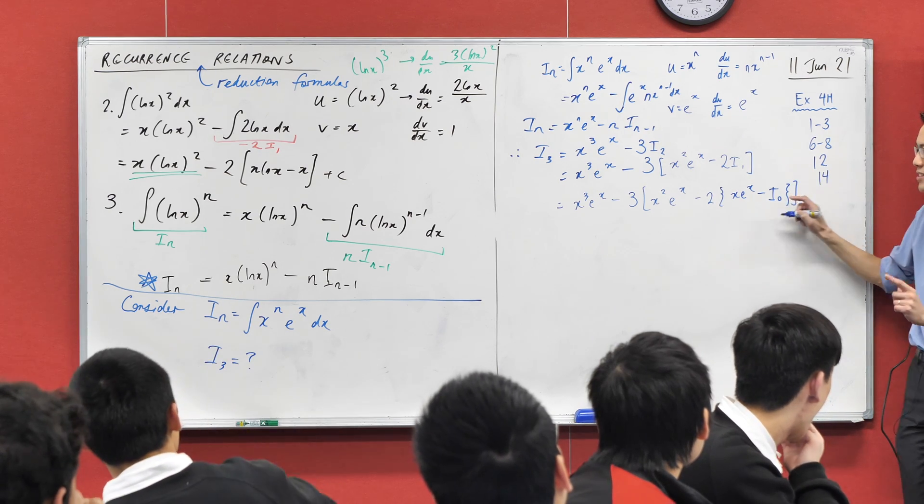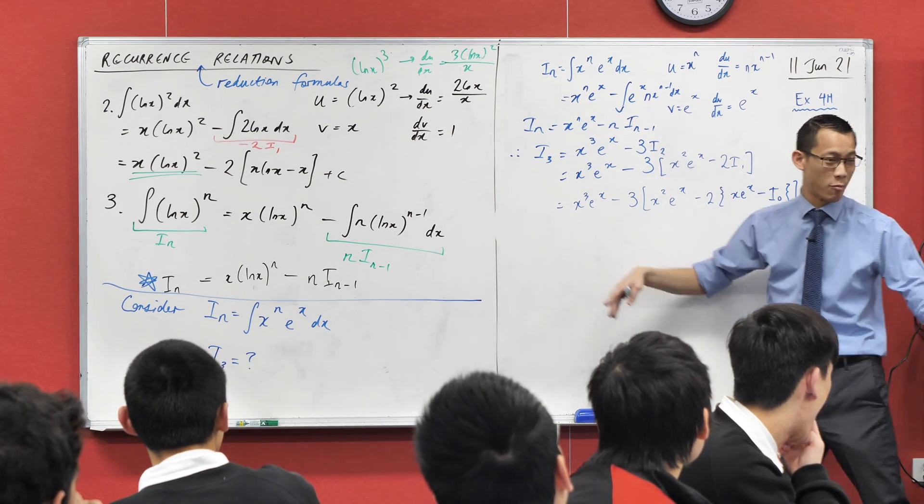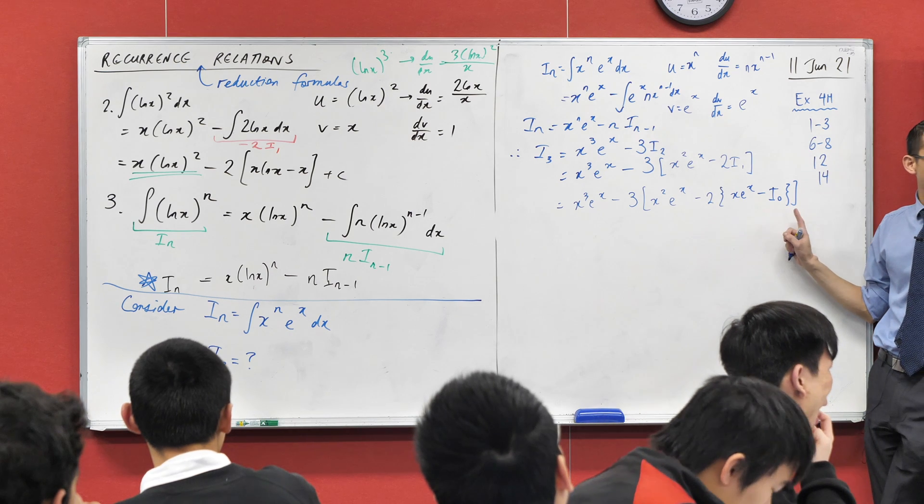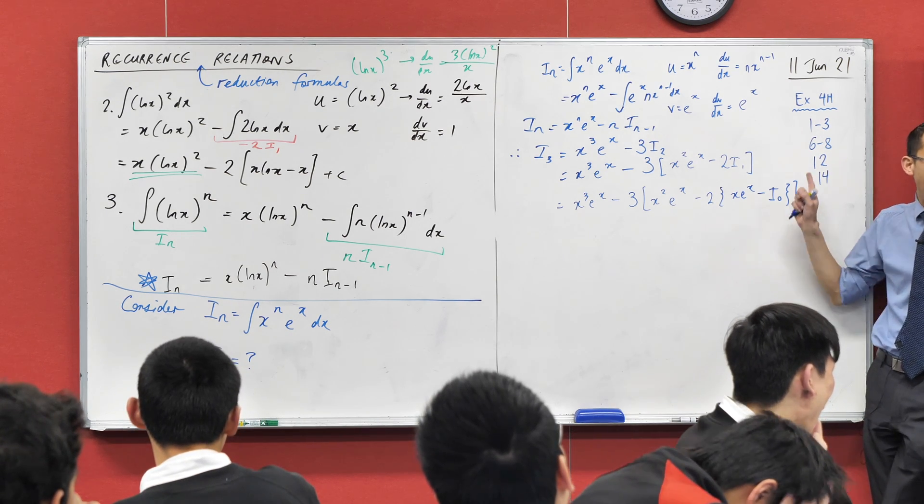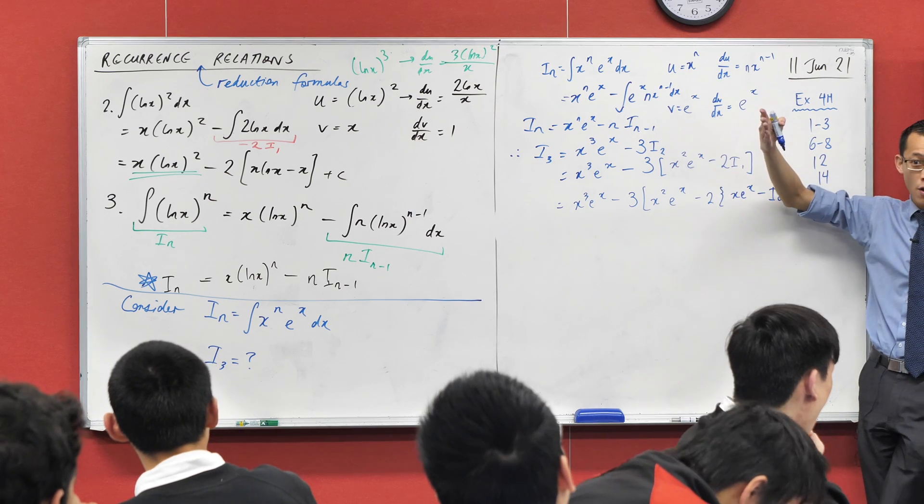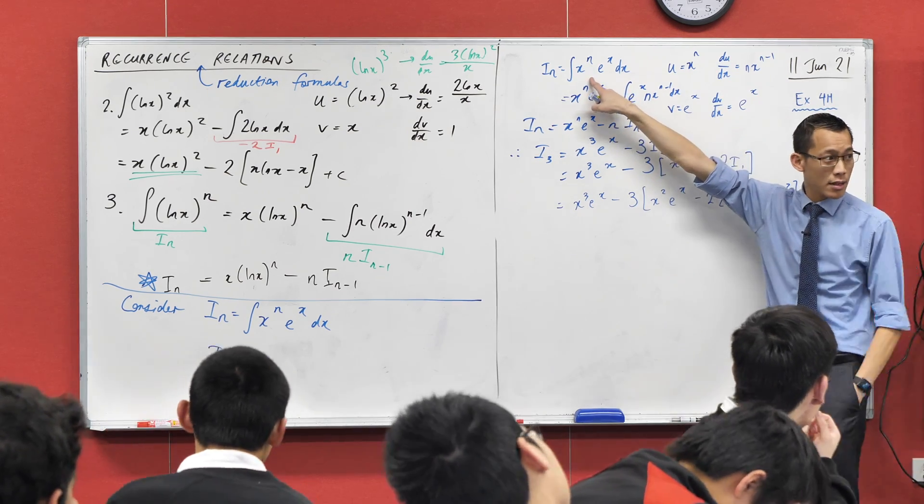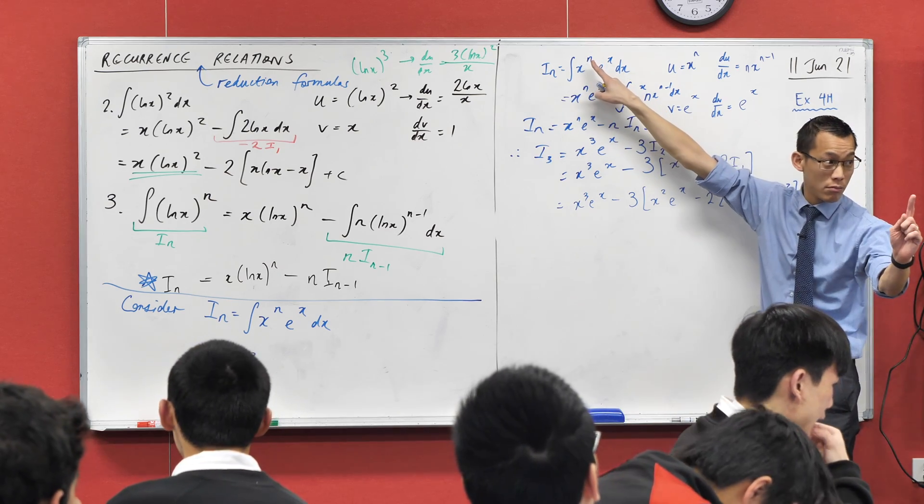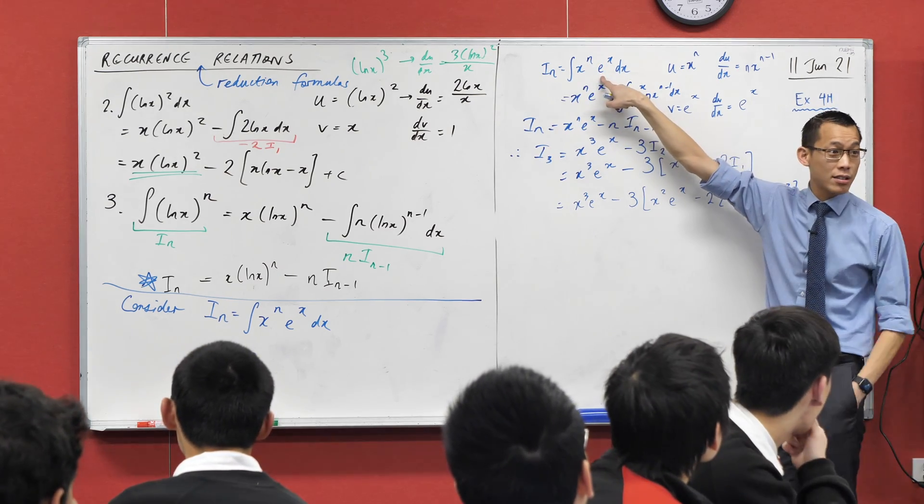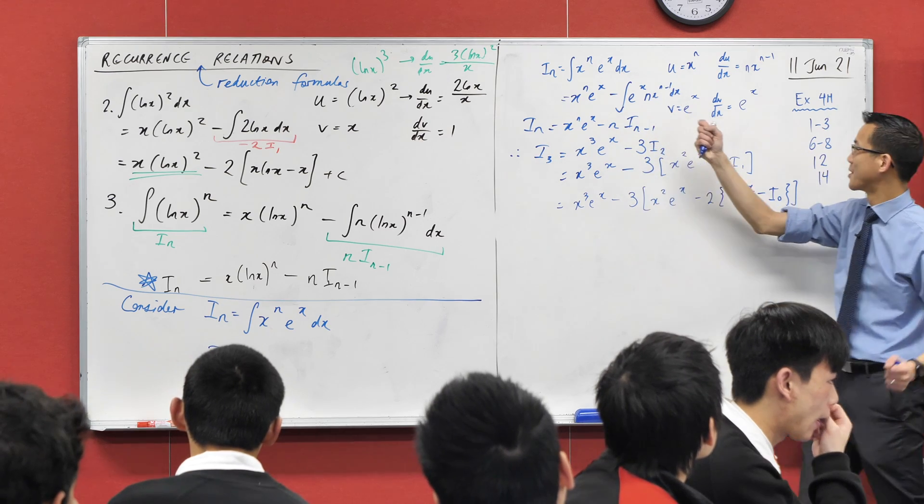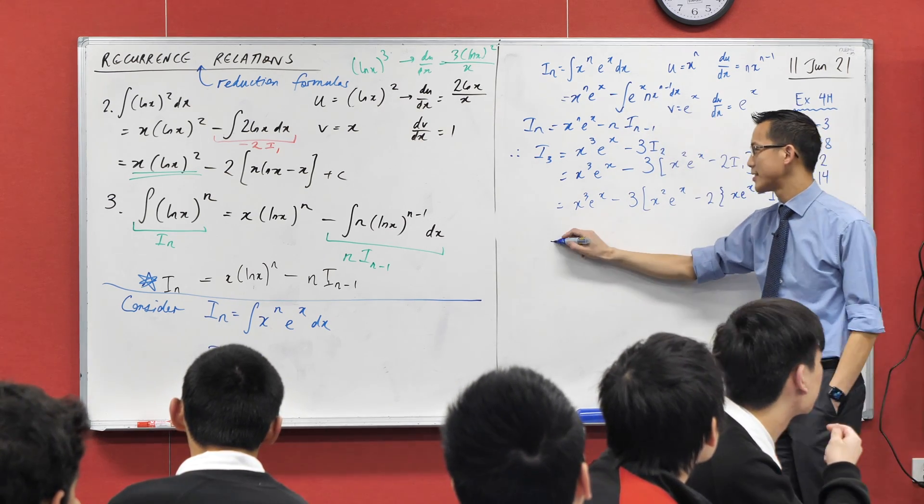If I go x cubed e to the x, it's still hanging out there, 3 lots of x squared e to the x. If I then say, hold on, by the definition of what i n is, if I just put in 1, let's just see what happens. It looks like I'm going to get x to the power of 1, e to the x, minus 1 lot of i0. And you're like, I started off this idea going 1, 2, 3 and counting up. I haven't yet thought about whether i0 makes sense, but does it?